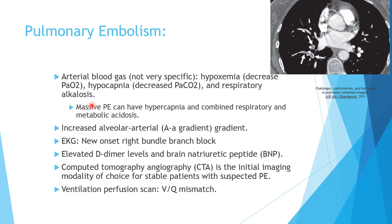However, massive cases of PE can result in hypercapnia (increased CO2), which causes respiratory acidosis. In these cases the patient may also have shock, leading to metabolic acidosis — a combined respiratory and metabolic acidosis. To summarize: ABG shows hypoxemia, most cases show hypocapnia and respiratory alkalosis due to increased respiratory rate, but massive PE may show hypercapnia and mixed acidosis.